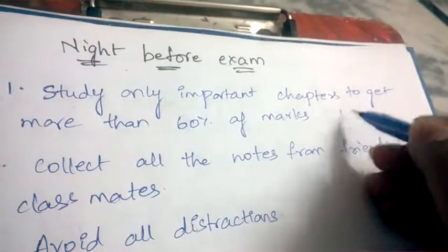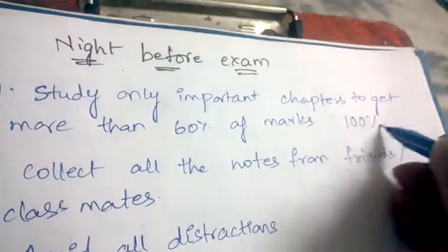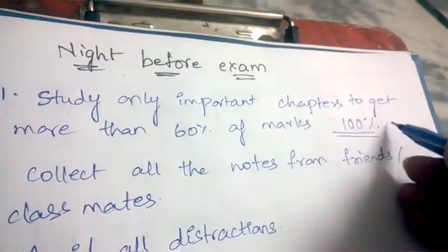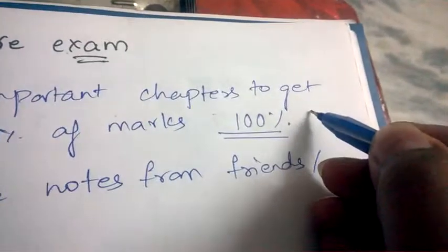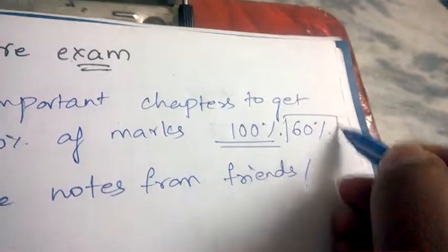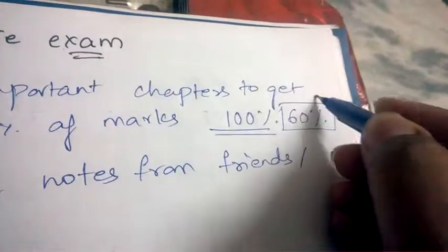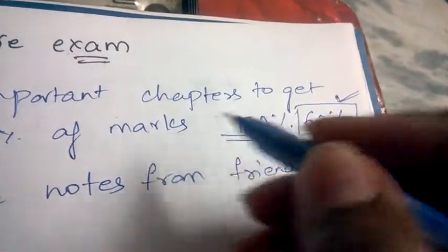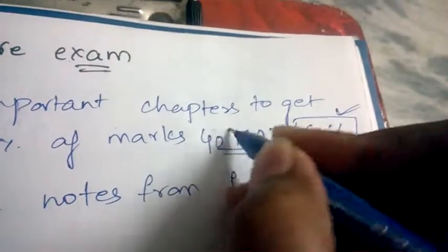We can eliminate approximately 40 percent of the portion. With this 60 percent of that portion only, we can score very good marks out of the whole portion.